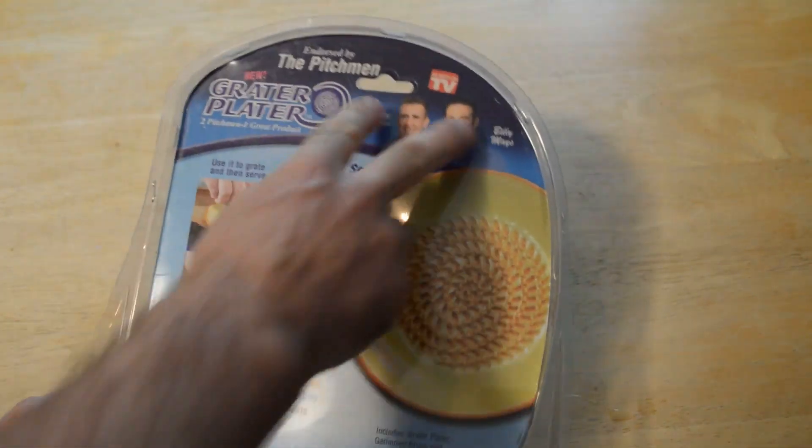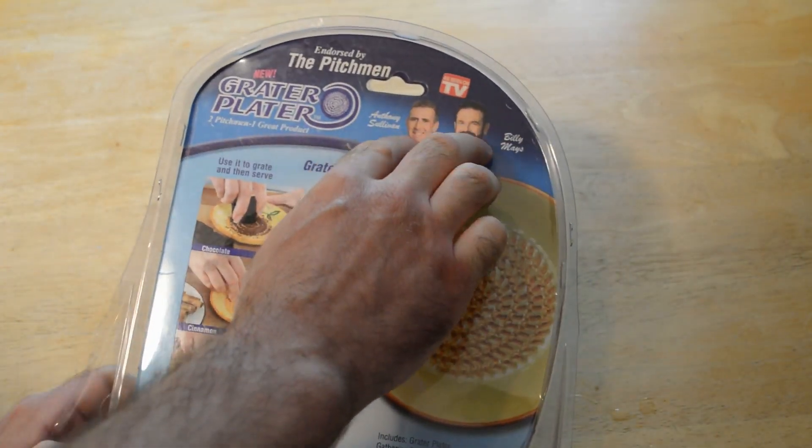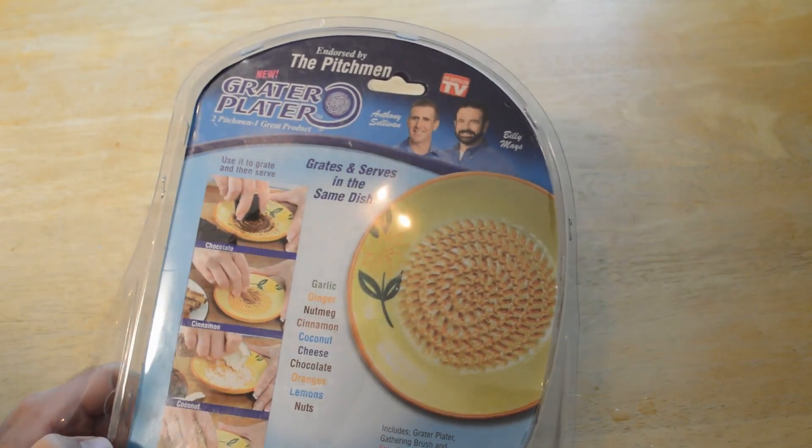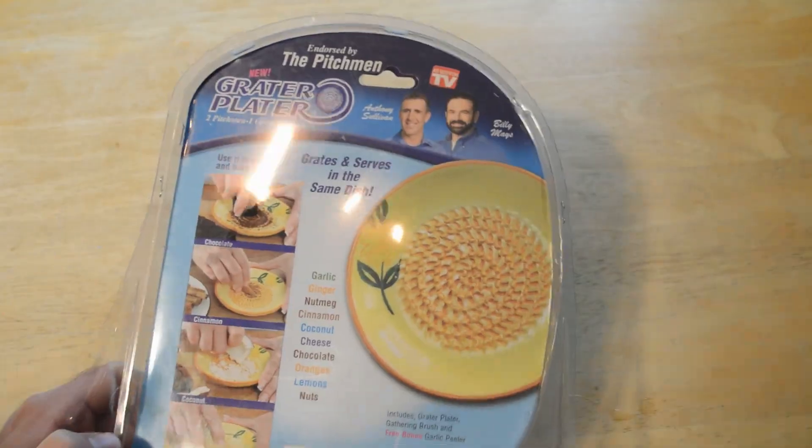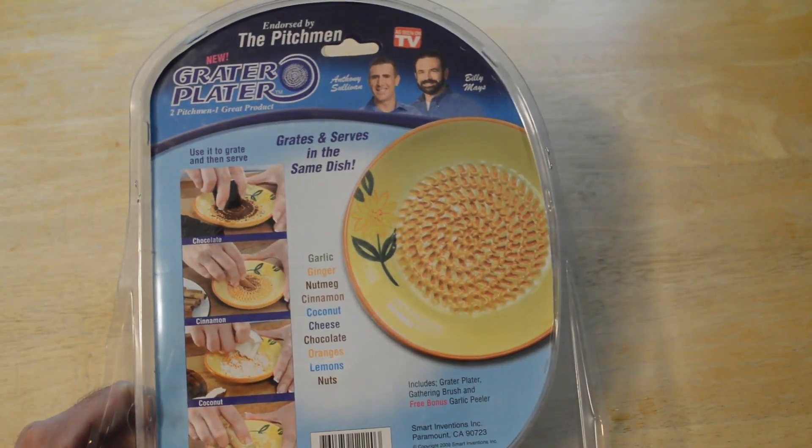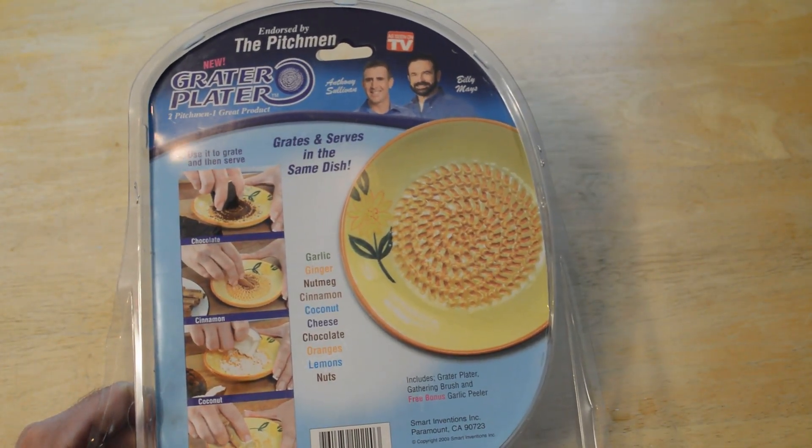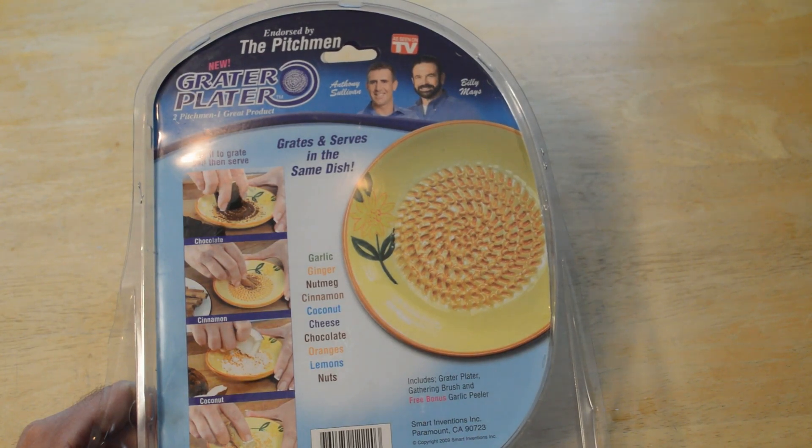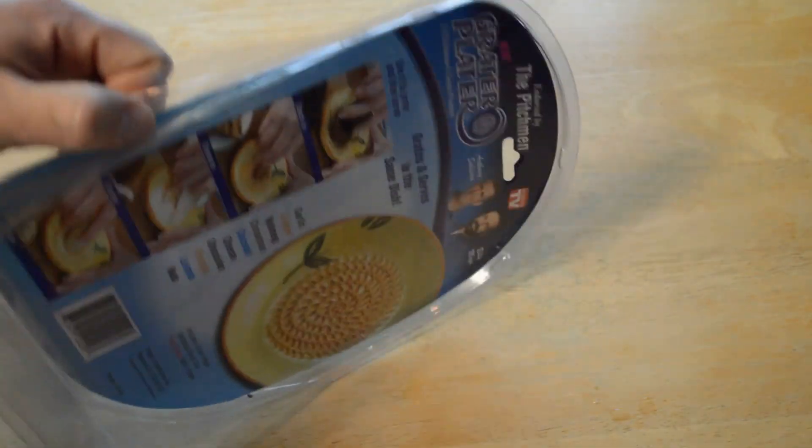But yeah, best of all, it's endorsed by the famous Anthony Sullivan and Billy Mays As Seen On TV product, endorsed by the Pitchman. There used to be a show on the, I believe it was the Discovery Channel, called the Pitchman. But you can grate garlic, ginger, nutmeg, cinnamon, coconut, cheese, chocolate, oranges, lemon, nuts. So let's open up, see what's inside, see if this thing actually works.